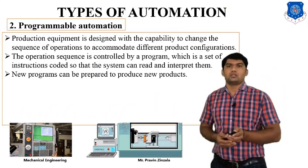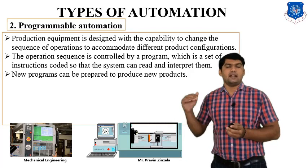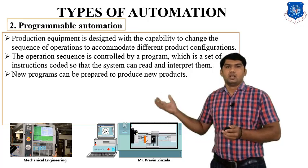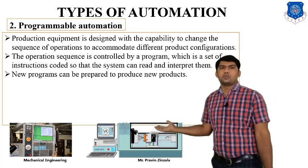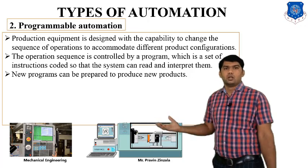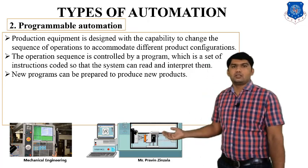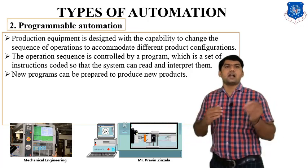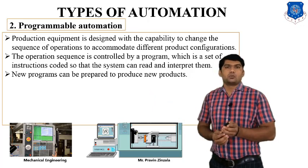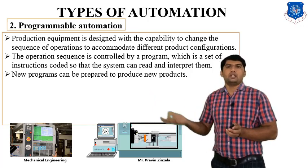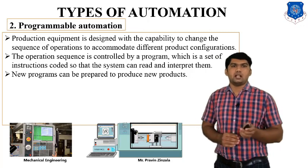The second type is programmable automation. Here, equipment can produce different products by changing parameters such as diameter, which is an advantage over fixed automation. Programmable automation requires a program for production — we utilize a computer with programs such as M-code and G-code to prepare instructions for a particular component. Examples include NC machines and CNC machines, which can produce large components and new products by changing the program.